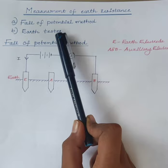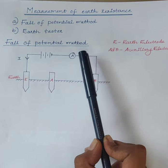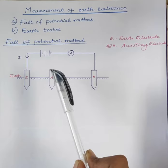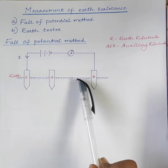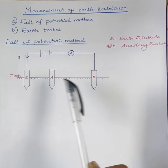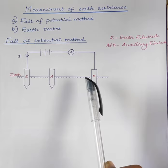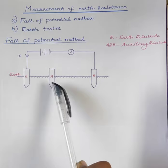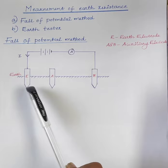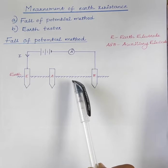Now we will discuss the fall of potential method for the measurement of earth resistance. The figure shows the circuit for the measurement of earth resistance with the fall of potential method. E is the earth electrode. A and B are the auxiliary electrodes. Auxiliary electrode B is inserted in the earth at a distance away from the earth electrode. Auxiliary electrode A is inserted in the earth between E and B. The positions of electrodes E and B are fixed, and the position of auxiliary electrode A is changed.